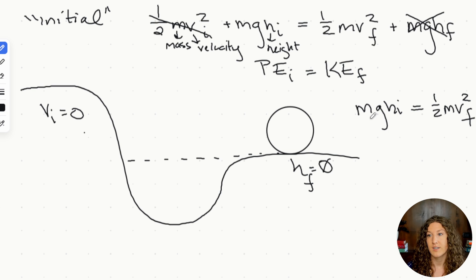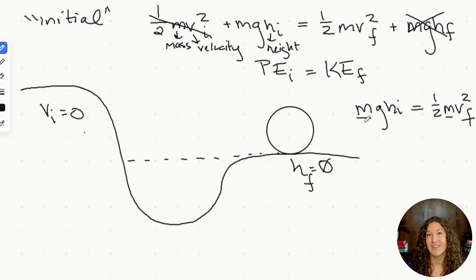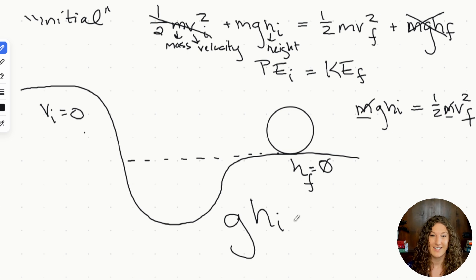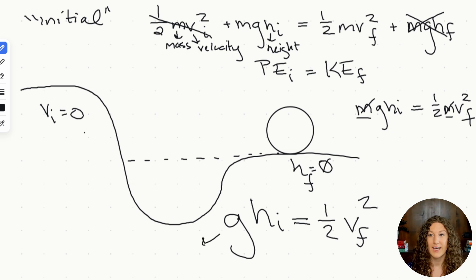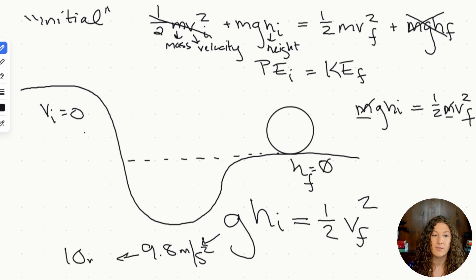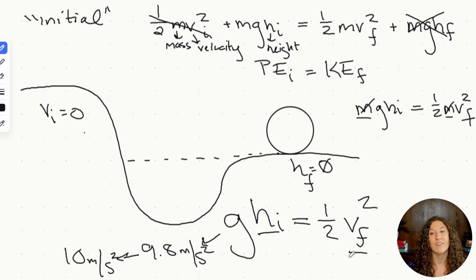Both sides have mass, and since the object's mass stays the same, we can cancel it out. Our simplified final equation is: gravity times initial height equals one half times final velocity squared. Gravity is a constant — 9.8 m/s², which we round to 10 on the MCAT since there's no calculator. So we have just two variables: initial height and final velocity.